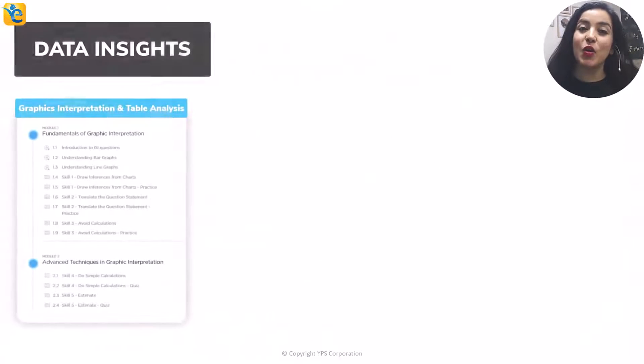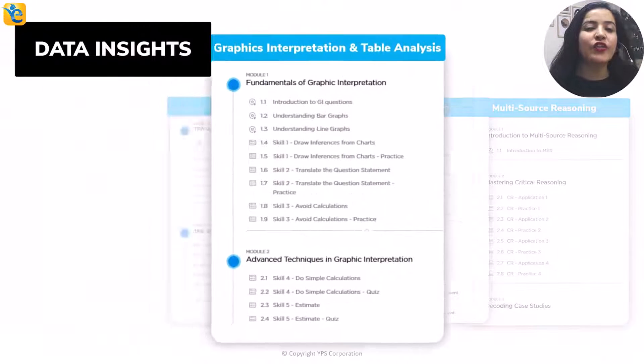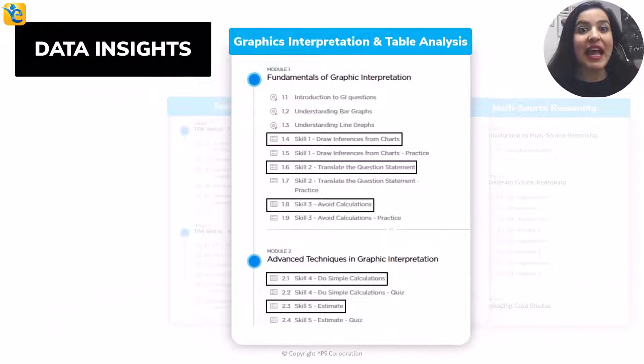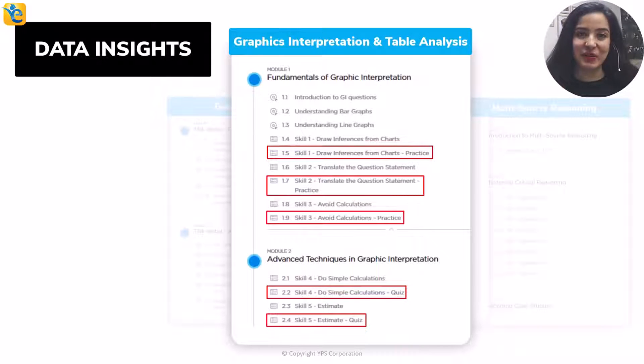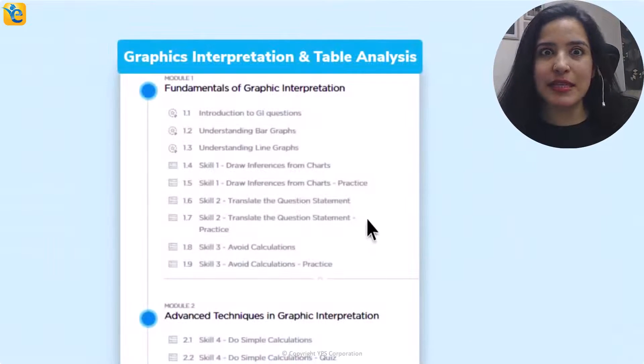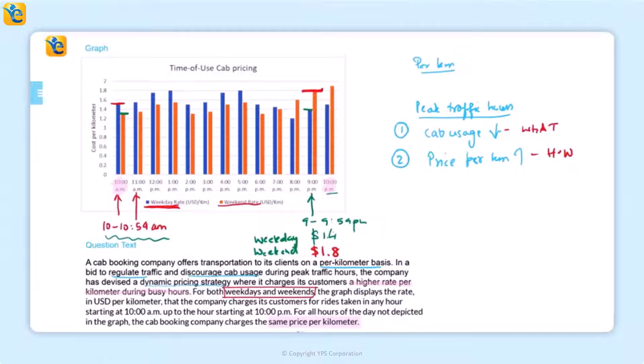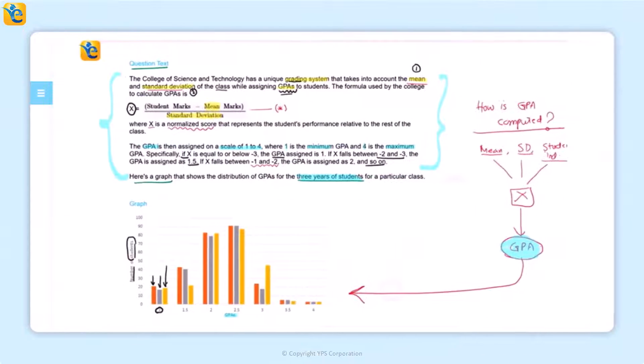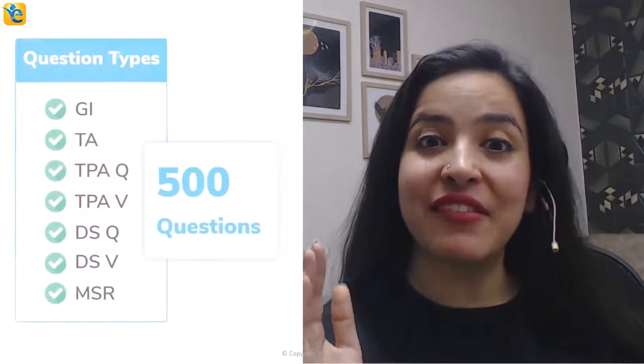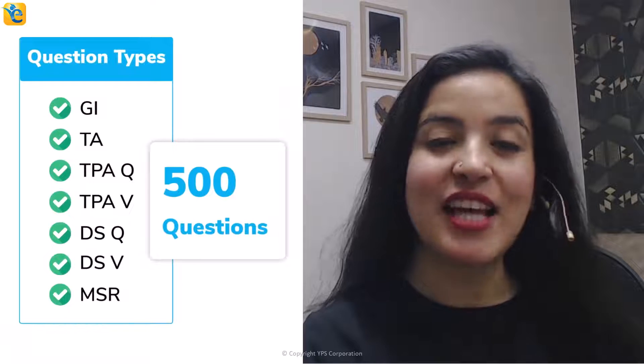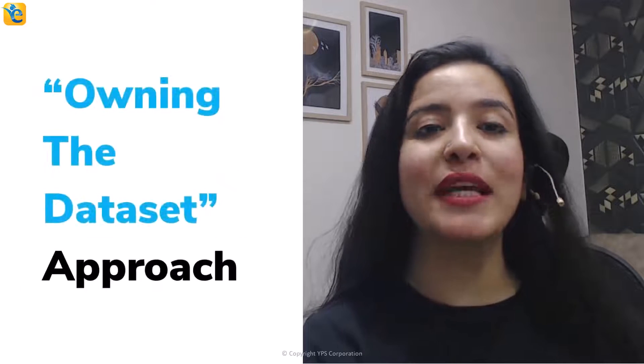Could you have arrived at this approach without thoroughly understanding the data? This is the power of owning the data set. We've created a course architecture that teaches this skill through every guided quiz. Through around 500 questions, you'll learn these process skills to comfortably use this approach.